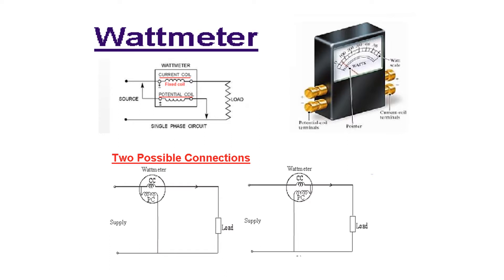The current coils are fixed and will be in series. The potential coils can be connected in two ways: one arrangement is shown here, and the other brings the connection to the other side. These are the two possible connections.